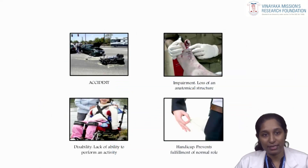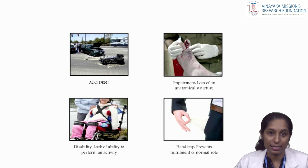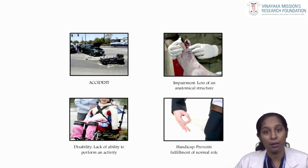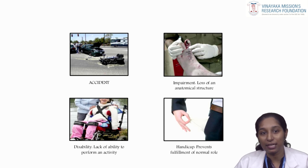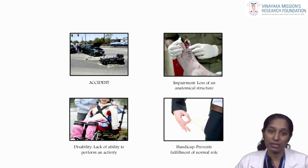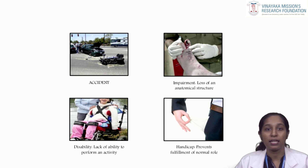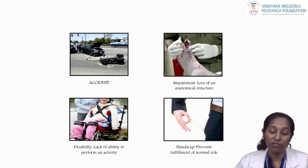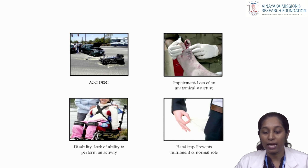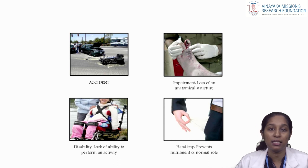Let us see with the help of some examples. If you take the case of an accident causing loss of foot: the loss of foot is the impairment. Due to this impairment, suppose the person is unable to work or do his daily routine — the inability to work is the disability. And due to this disability, when that person is not able to keep up with the job or becomes unemployed, it is termed as handicap. Here the loss of anatomical structure — the loss of foot — is the impairment; the lack of ability to perform the activity is the disability; and when the person is prevented from doing his normal role, it is the handicap.